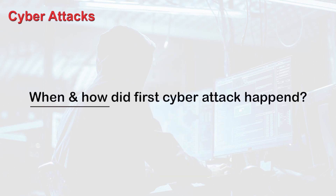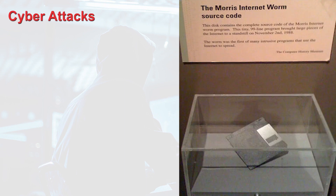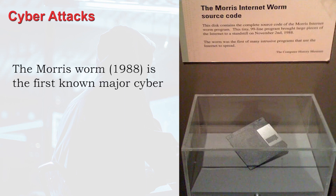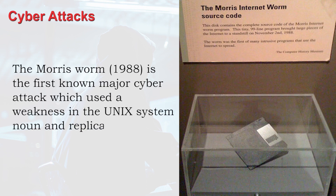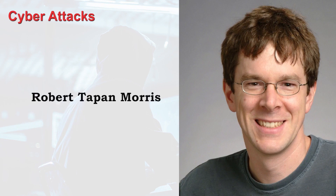When did the first cyber attack happen and how did it happen? The Morris Worm, which was executed in the year 1988, is the first known major cyber attack. It used a weakness in the Unix system and replicated itself. The worm was developed by Robert Tappan Morris, who became the first person ever to be convicted under the US Computer Fraud and Abuse Act.